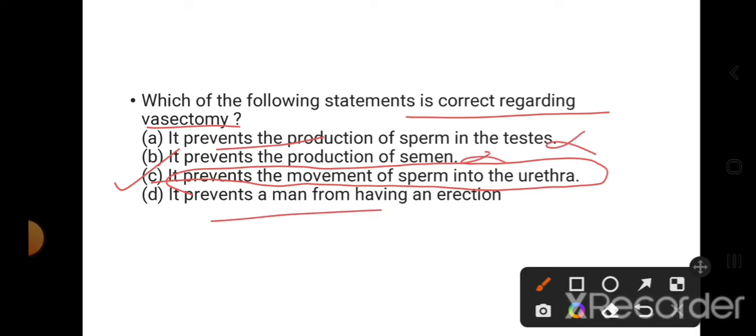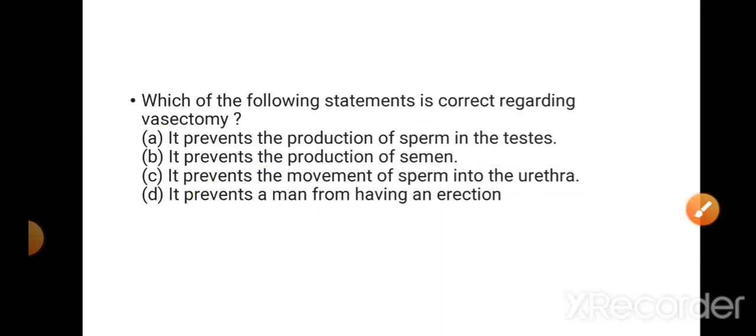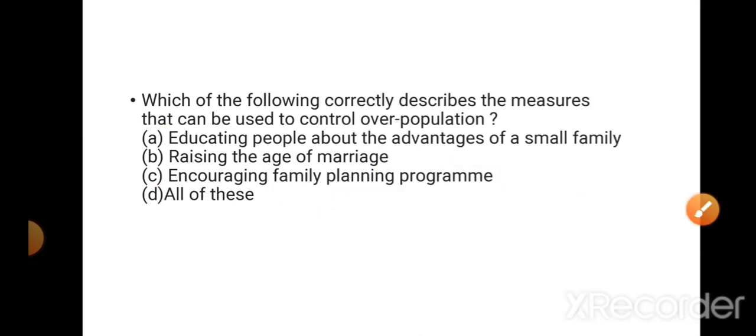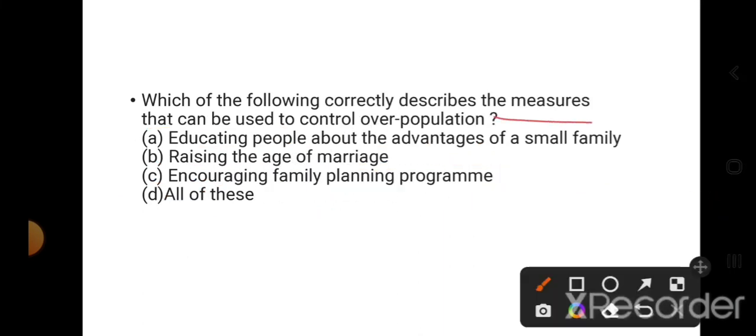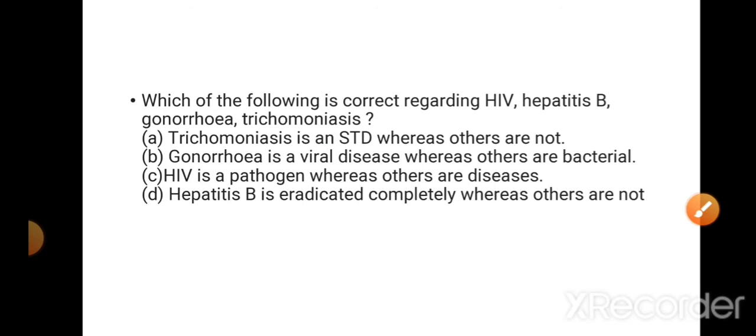Which of the following correctly describes the measures that can be used to control overpopulation? What measures and steps: educating people about the advantages of small family - yes, raising the age of marriage - yes, encouraging family planning program - yes. So all of these is the right answer.